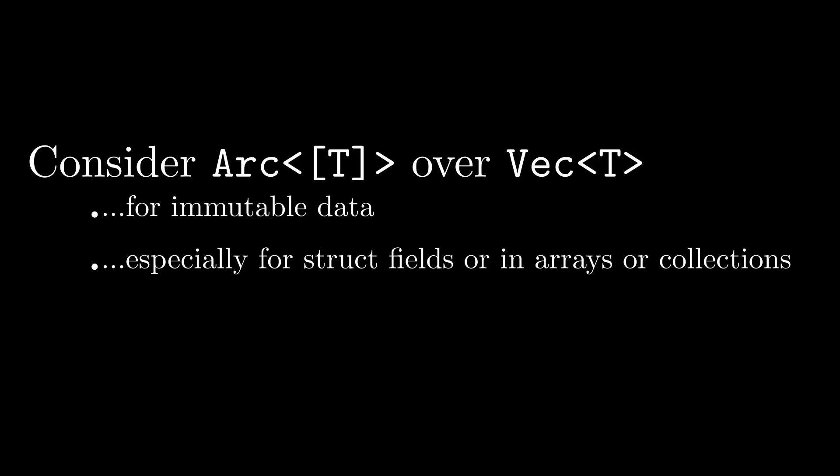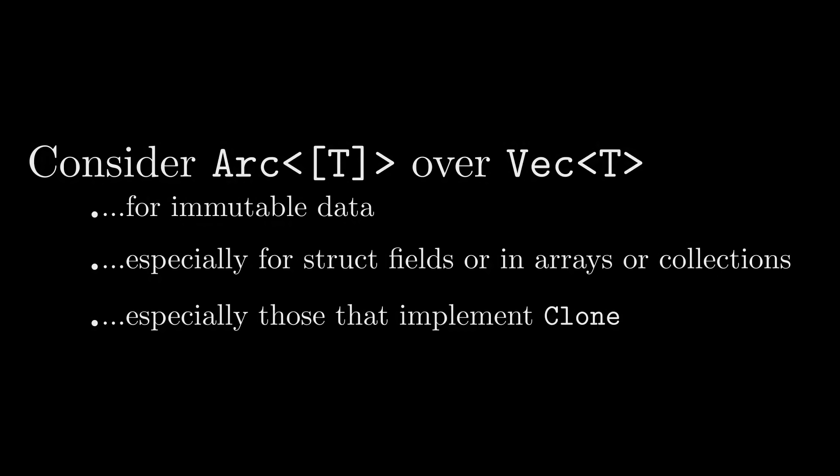It's really good for data that you're going to be storing in structs, arrays, or collections, or generally passing around. I'm not talking about a Vec that you collect real quick as a local variable or use for scratch space — something you're going to be storing for a longer period of time. Especially for data that implements Clone, since Clone is kind of the superpower of Arc. If you don't need Clone, you can do even better with Box, but we'll talk about that at the very end.